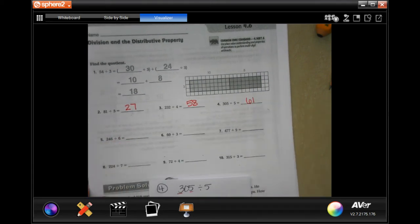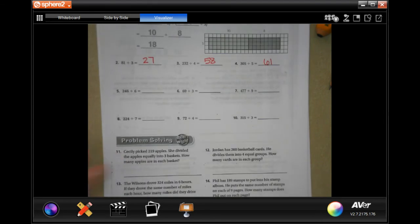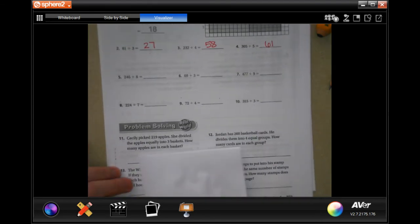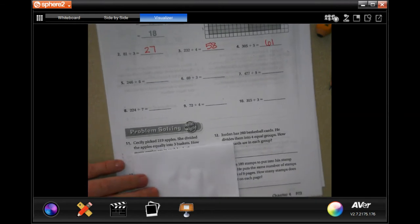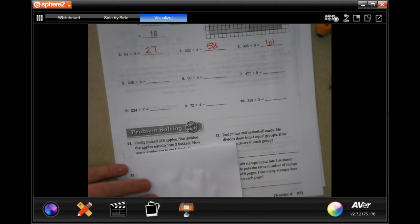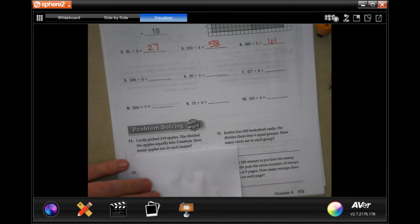I want you guys to do through 10, you totally can, I believe in you. We are going to go down and do number 11, and it says Cecily picked 219 apples. She divided the apples equally into three baskets.